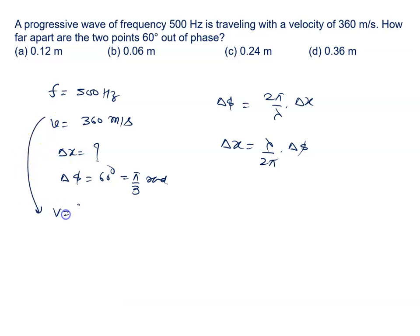From this we can say velocity is given by frequency into wavelength, so wavelength is velocity upon frequency. Velocity is 360, frequency is 500, so it is 0.72 meter.